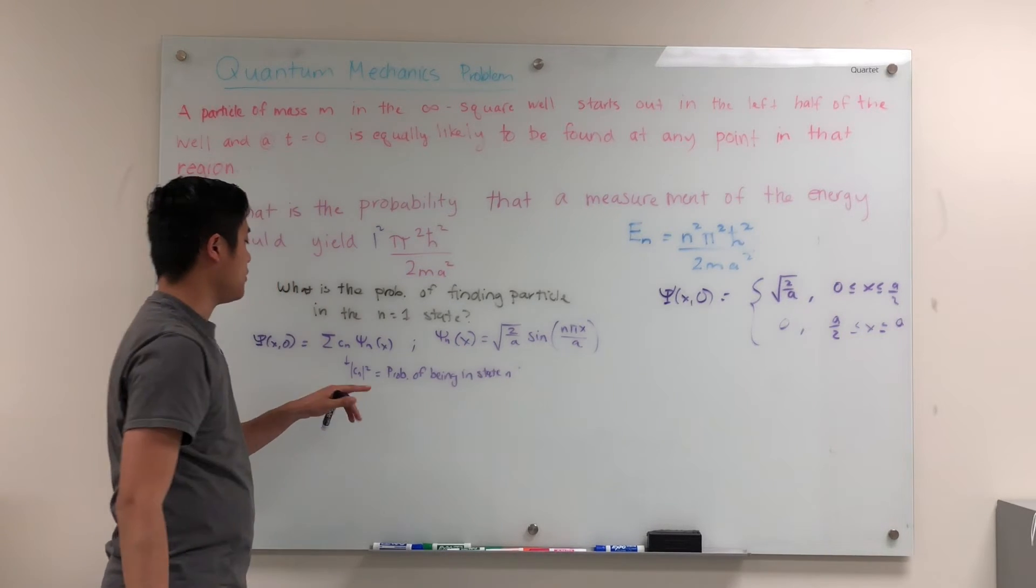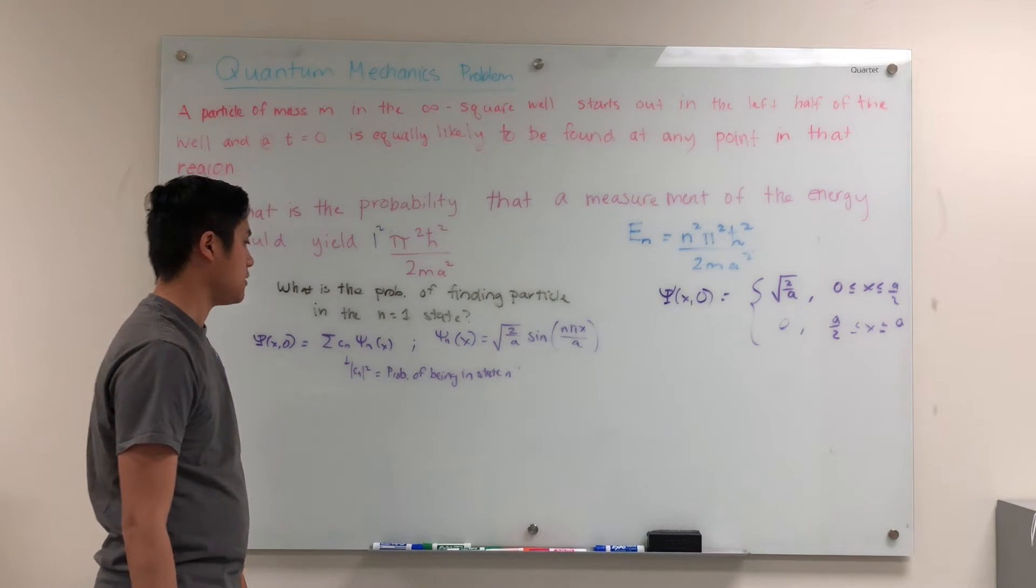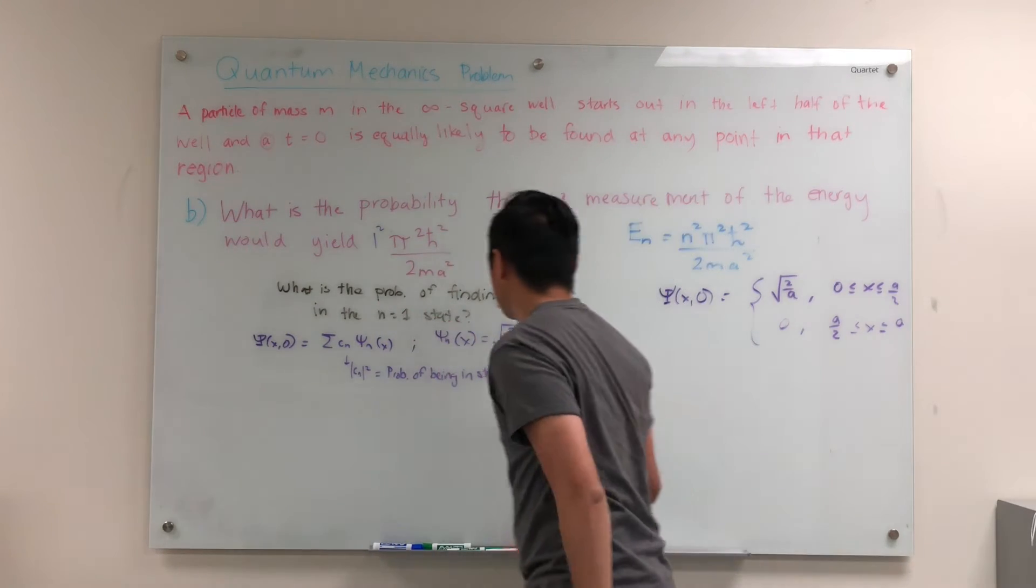So we have to essentially calculate, what is C1? How do we get C1 out of here? Now, to get C1, because we want to figure out what's the probability of being in the n equals 1 state,